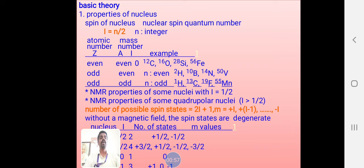The atomic mass and mass number will vary. For even-even, it will give zero. That means C-12, O-16, Silicon-28, Iron-56 - these are inactive in NMR.